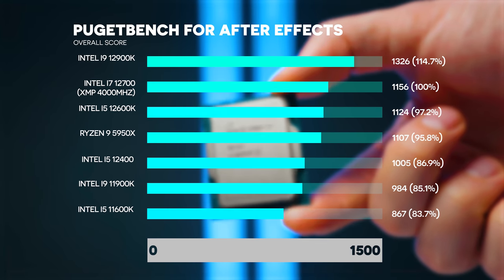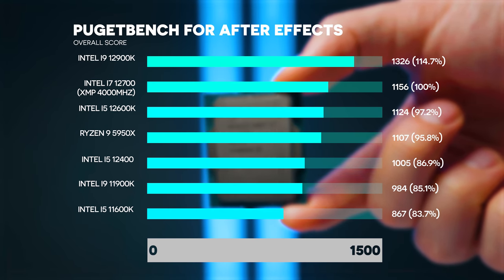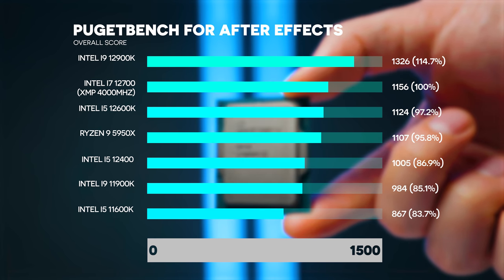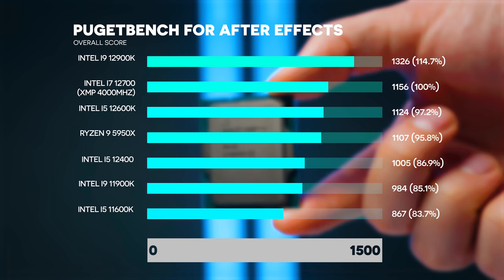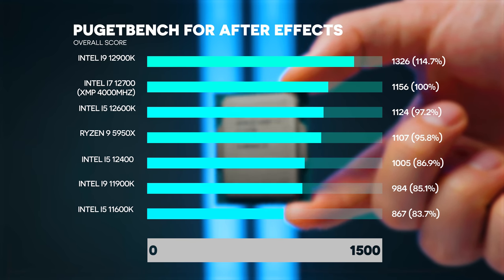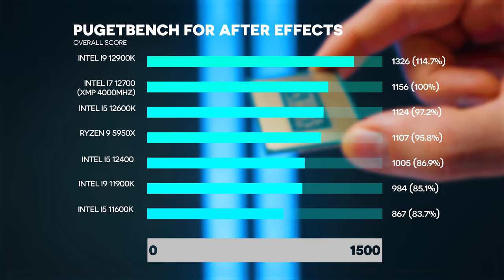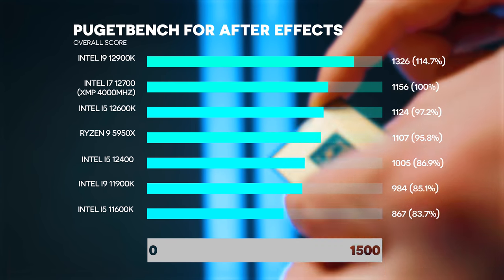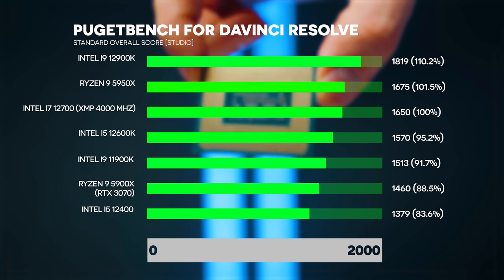Moving on to After Effects. The 12900K is 14.7 percent faster - quite a bit. The 12600K is only 2.8 percent slower, and the 5950X is about 4.2 percent slower than the 12700. So if After Effects is a big part of your workflow, the 12700 doesn't give you that much of an increase compared to the 12600K, but the 12900K will have a much bigger performance increase there.